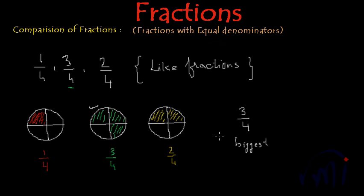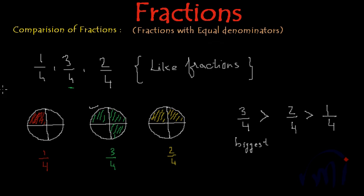Which comes after this? The picture in which I have shaded two parts in yellow — so next comes 2 by 4. The biggest is 3 by 4, then comes 2 by 4, which represents a smaller fraction than 3 by 4. And after this, in the end, we have 1 by 4 — this is the smallest fraction. Here we have only 1 portion shaded, here we have 3 portions shaded, and here we have 2 portions shaded. So the biggest fraction is 3 by 4, then 2 by 4, and the smallest is 1 by 4.